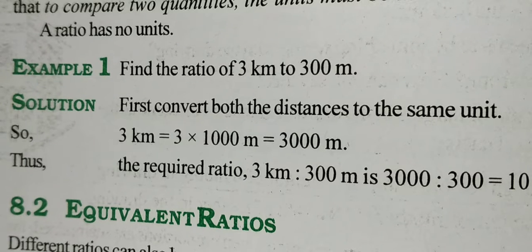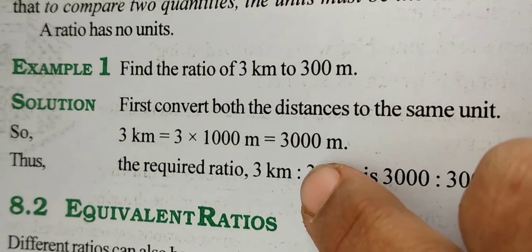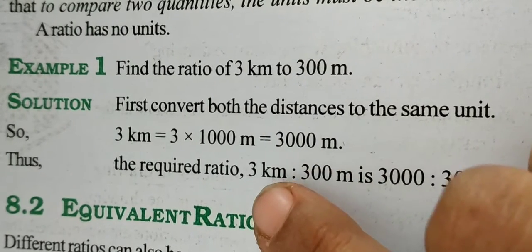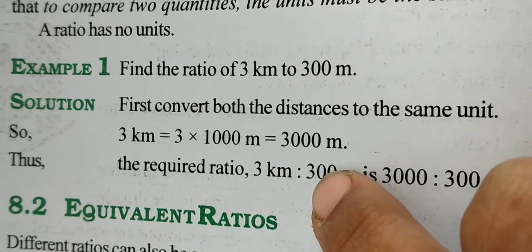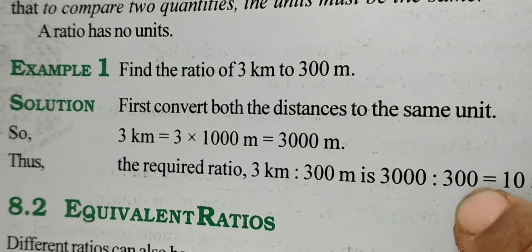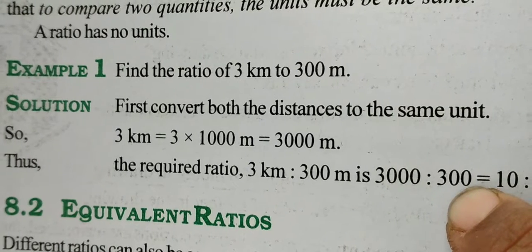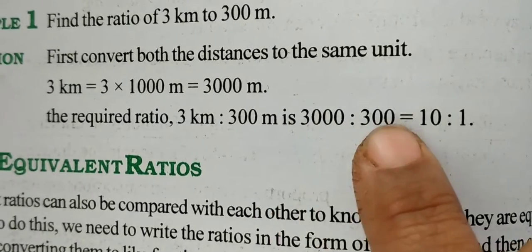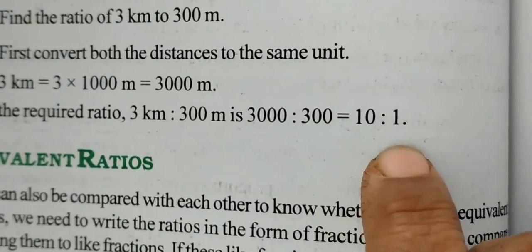Now we can find the ratio. In place of 3 kilometer you will write 3000, and the double dot like this tells you that we are finding out the ratio. This is in ratio form: 3000 is to 300. No units written. On simplifying, we get 10 is to 1.